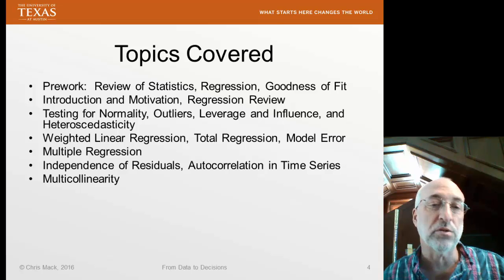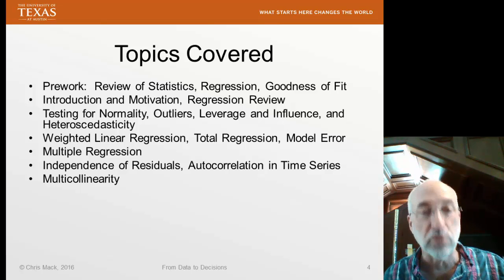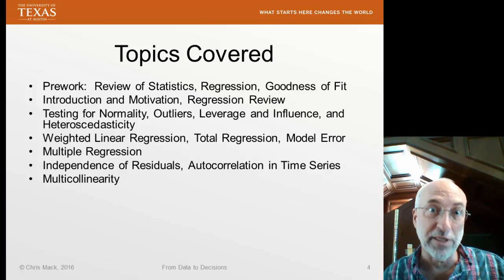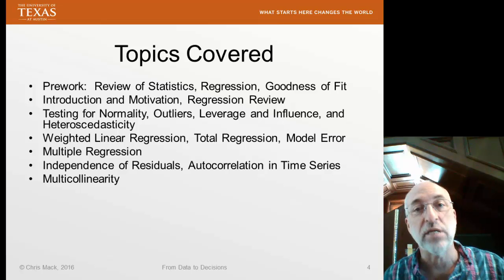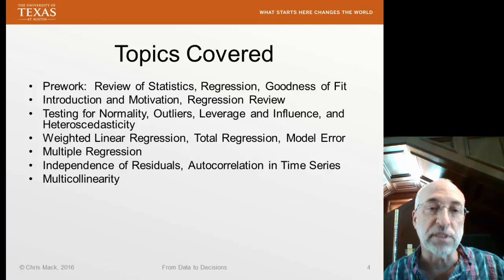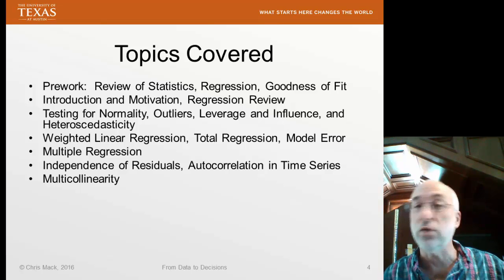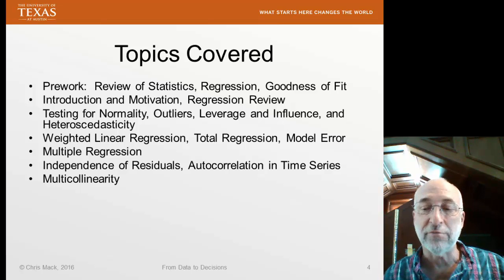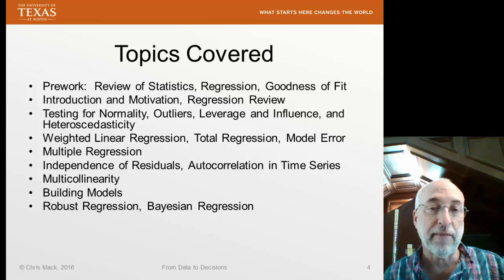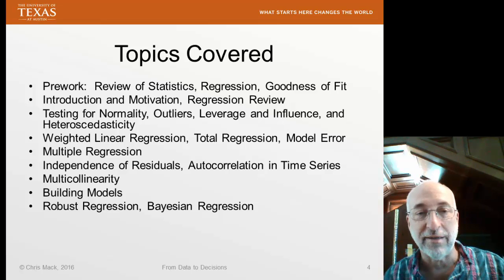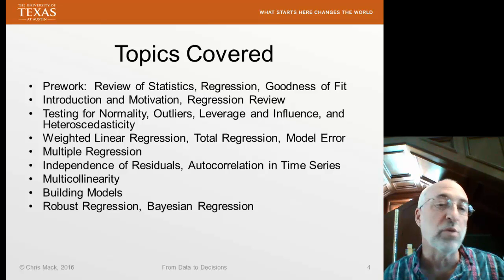And probably the most difficult problem to deal with in terms of multiple regression is multicollinearity. Now, if you're reading over these topics and you're hearing a bunch of words you've never heard of before, this goes to show you that introductory statistics doesn't cover topics like these, which are extremely important in doing real-world sophisticated analysis — the kind of analysis that you want to do before you, say, publish a paper using regression analysis of data. We'll talk about building models. The ultimate goal of all of this work is to create some kind of a model that we can use to make predictions. Some of the more advanced types of regression that go beyond the introductory level are topics like robust regression and Bayesian regression.